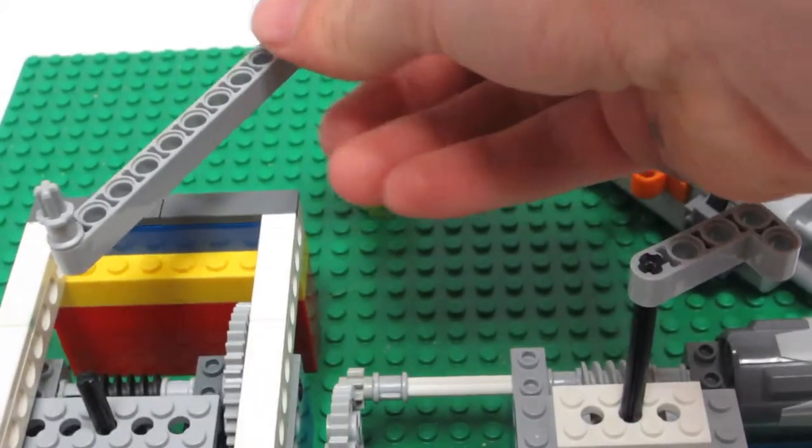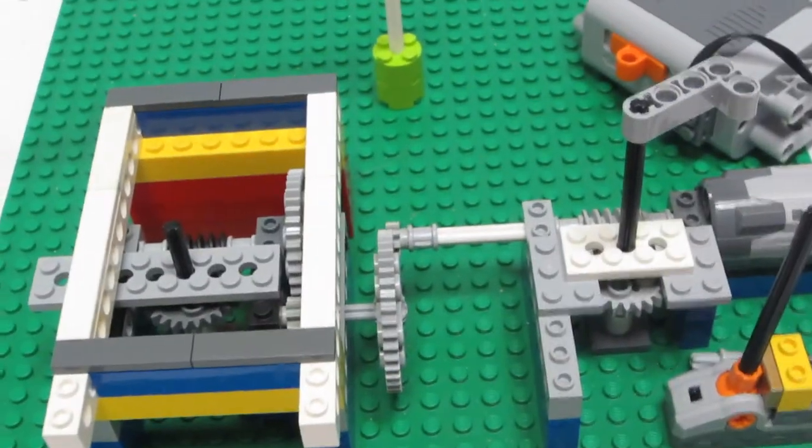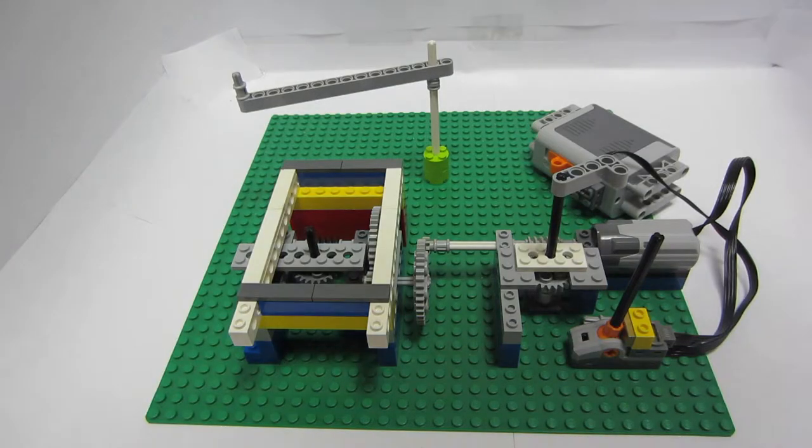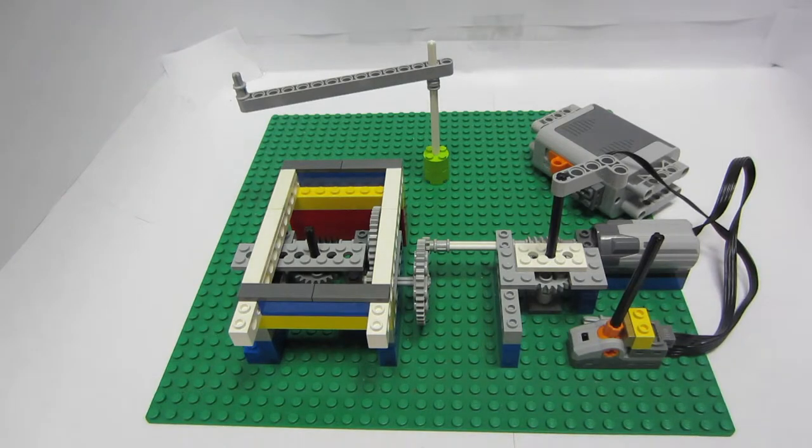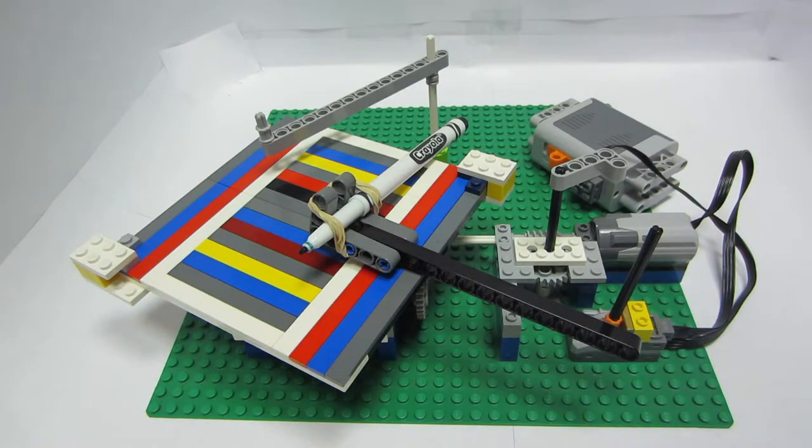Then we just have the swivel arm back here, and that's pretty much it. As you can see, it's a pretty simple design, yet it can give tons of different drawings. You can literally just mess with this for hours and get probably hundreds of different designs out of it. That's my LEGO Spirograph. I hope you guys enjoyed it. If you did, be sure to drop a like, and I'll see you in the next video.